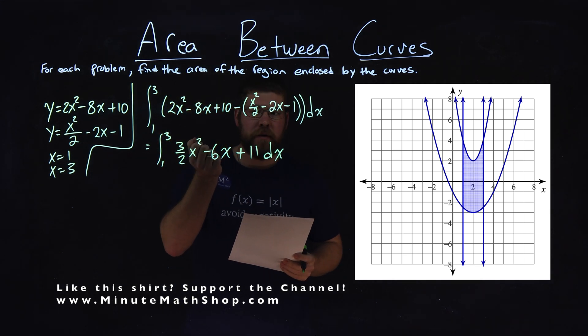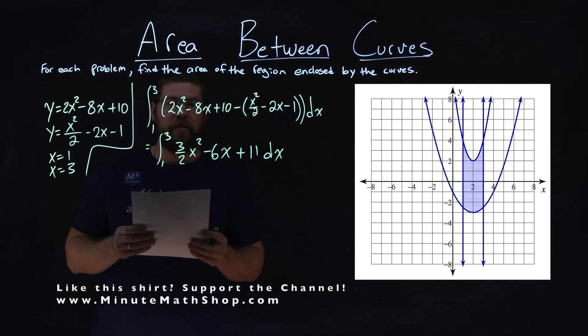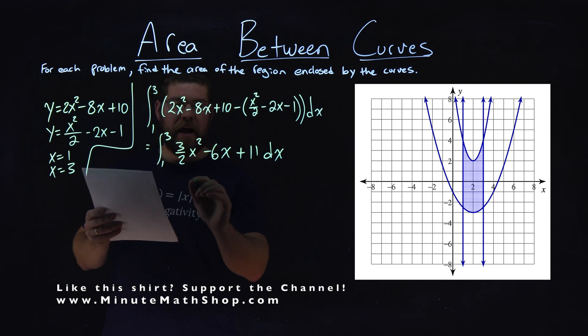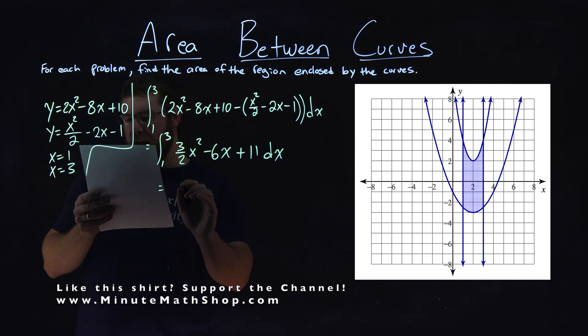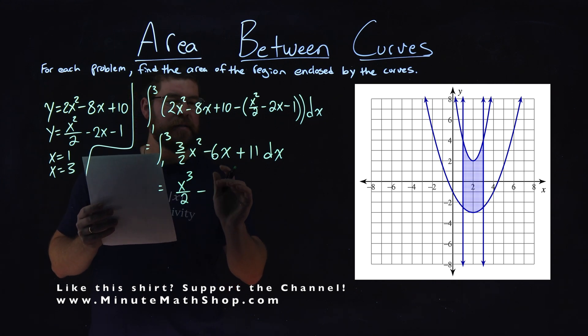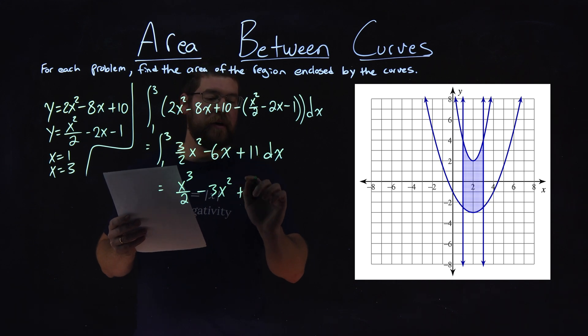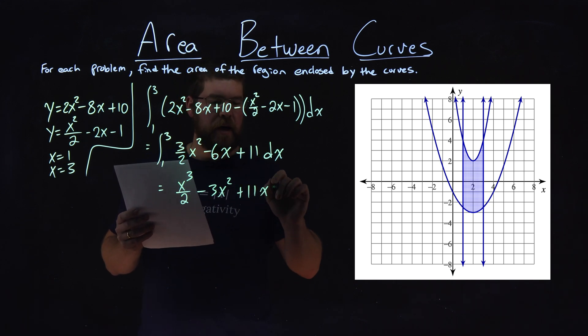So we're rewriting the integral now, and now we can take the integral. What's the integral of 3 halves x squared? And that comes out to be x to the third over 2 minus 6x squared becomes 3x squared, and 11 becomes 11x. We're integrating this from 1 to 3.